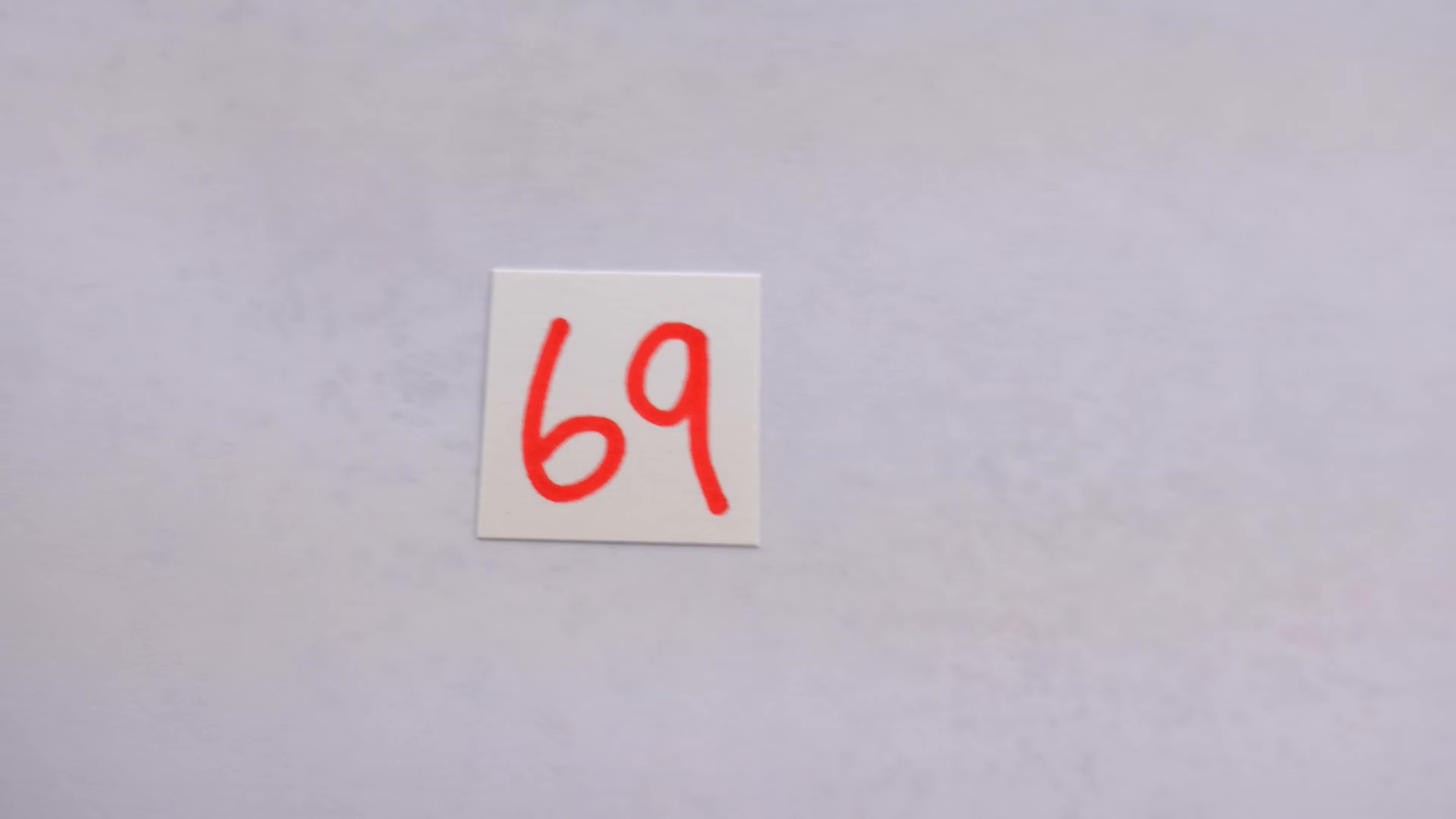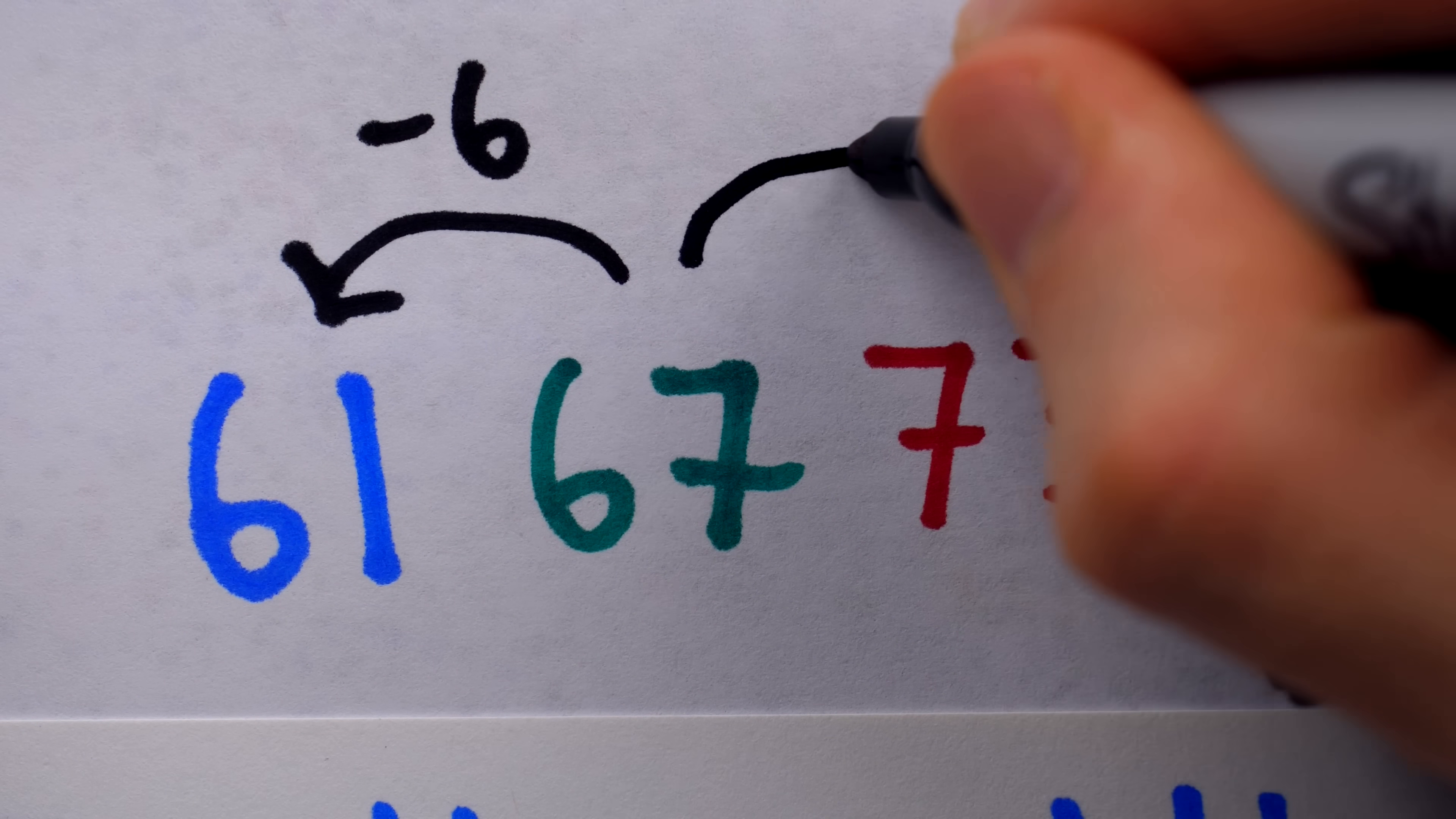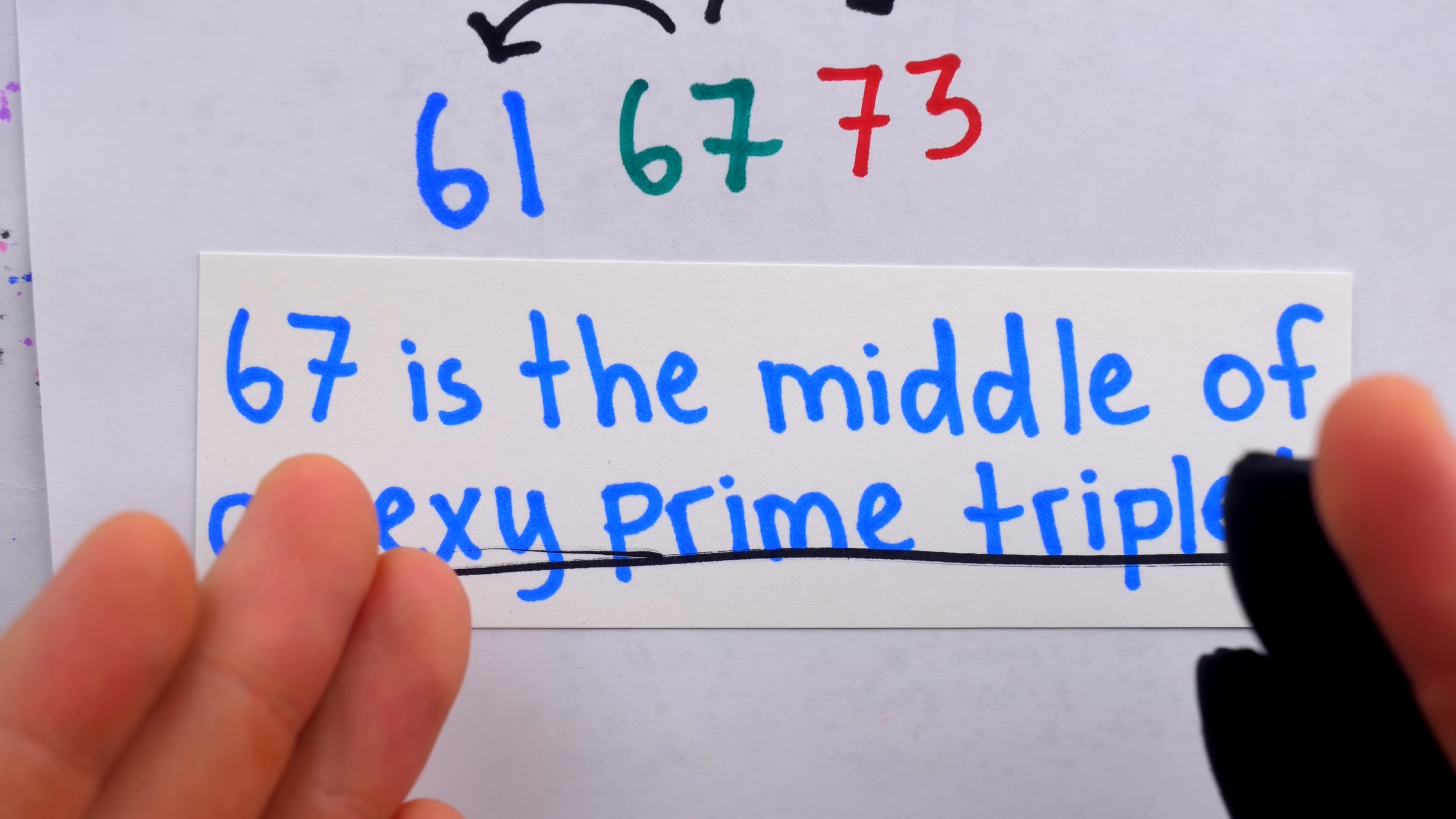And if you want to be immature, get 69 out of here, because 67 is actually the middle of a sexy prime triplet. 67 is prime, and 67 minus 6 is 61 which is also prime, and 67 plus 6 is 73 which is prime as well. These are all called sexy primes because they're six away from another prime, but they are consecutive sexy primes, making them what mathematicians call a sexy prime triplet. Isn't that nice?